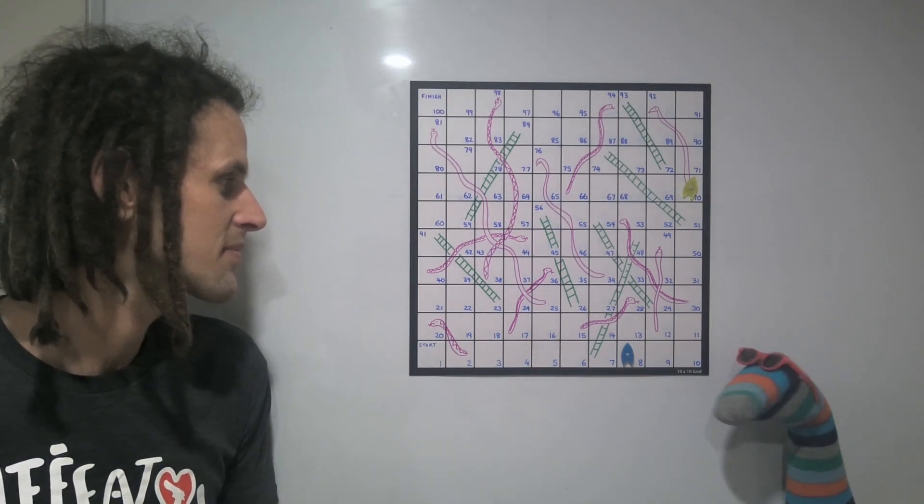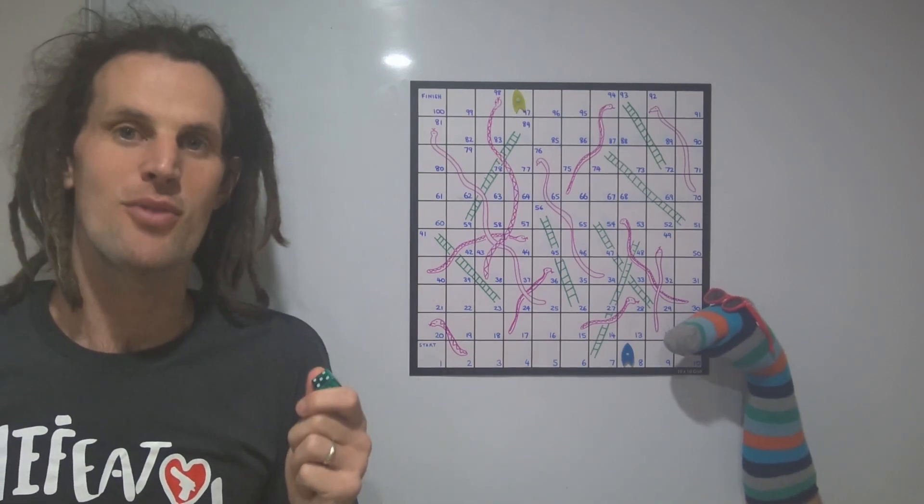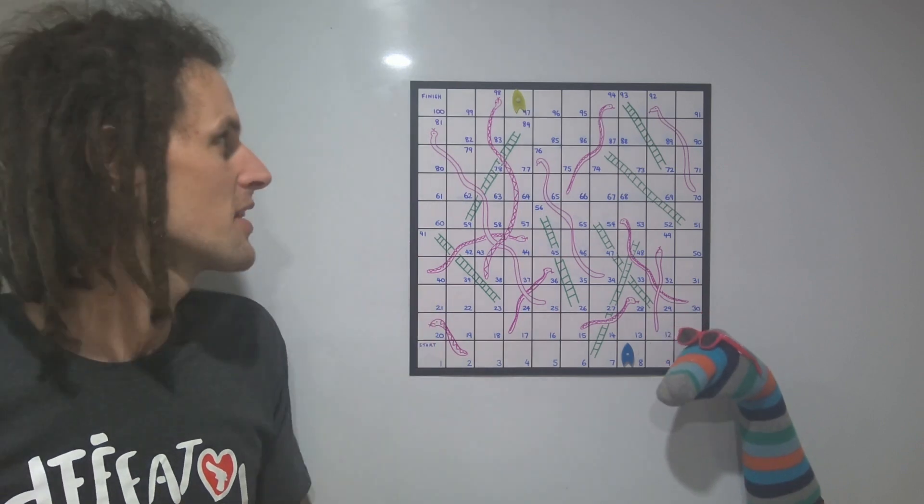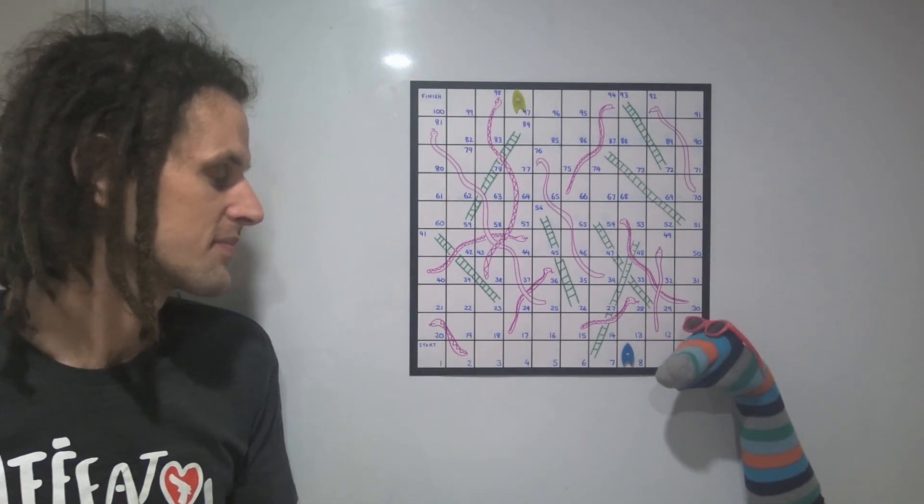That's interesting. Whenever a player rolls a dice, they must apply that number with an operation to the square that they're currently on.